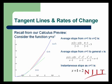Let's recall from our calculus preview session that we considered the function y equals x squared, in particular from the point (1,1) up to (2,4), as well as from (1,1) to general locations on the curve (x, x squared). The slope from (1,1) to (2,4) is the change in y divided by the change in x, so we get (4 minus 1) divided by (2 minus 1), which is equal to 3.